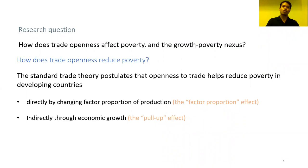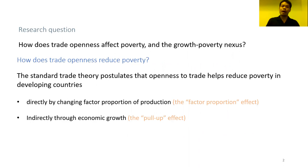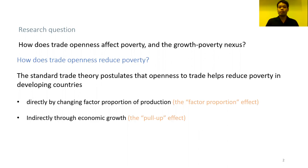Here is my research question: How does trade openness affect poverty and the relationship between economic growth and poverty reduction? How does trade openness reduce poverty? There are two channels. The first one: trade can reduce poverty directly by changing factor proportion of production — the so-called factor proportion effect. Another channel is trade can reduce poverty indirectly through economic growth, which we call the pull-up effect.